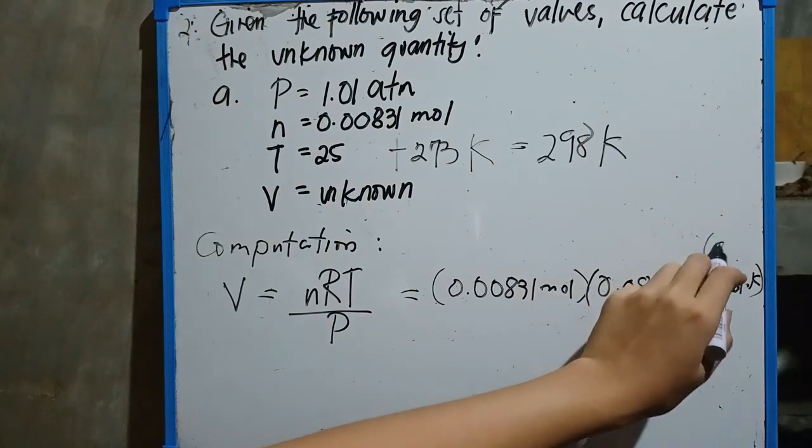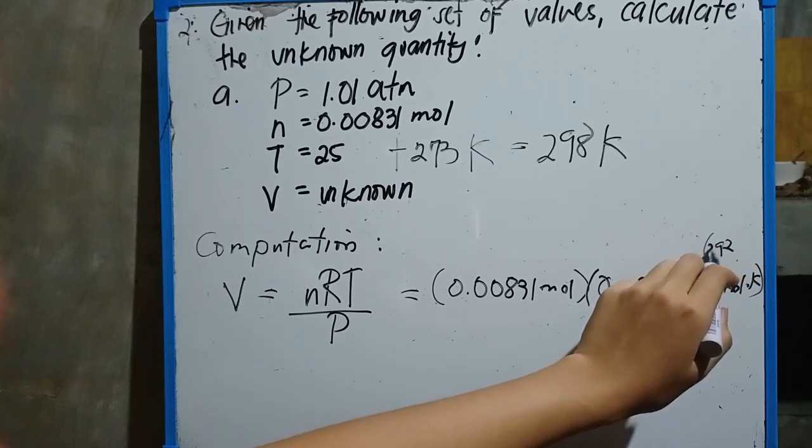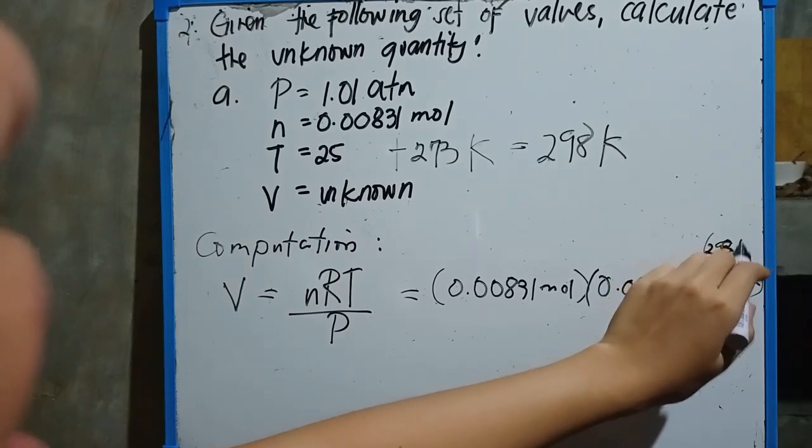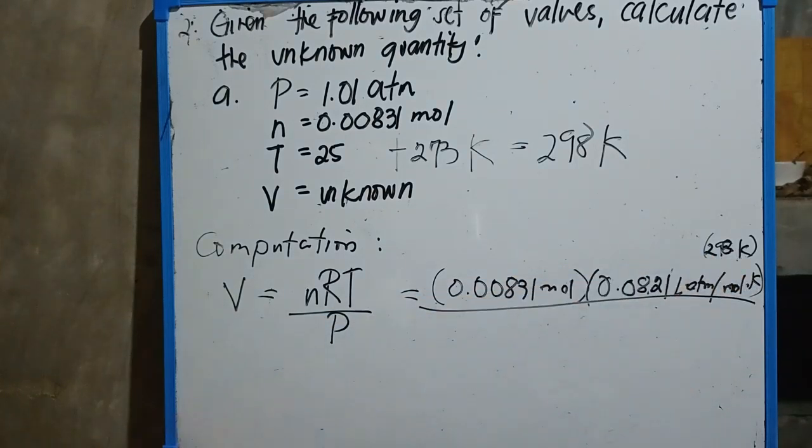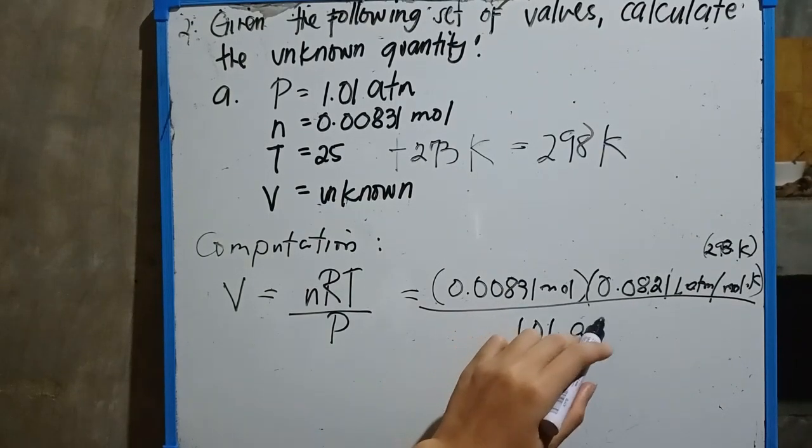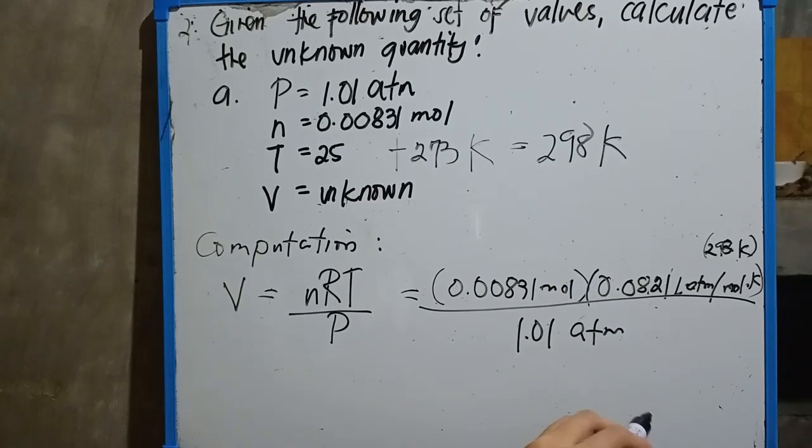Then multiply to the temperature which is 298 kelvin, over, divide by the pressure which is 1.01 atm. So cancel out like units.